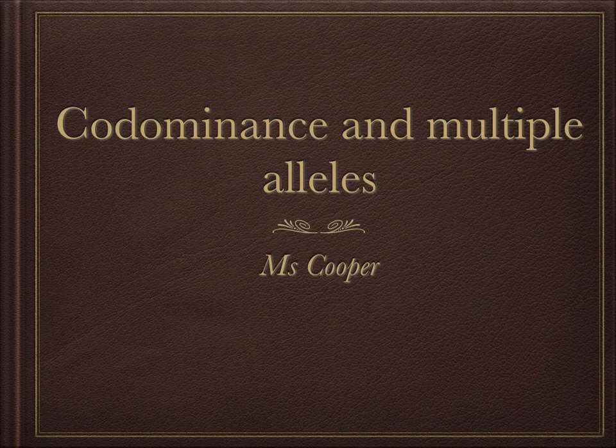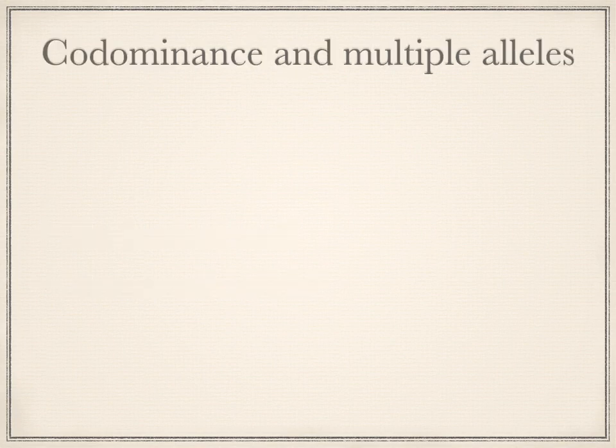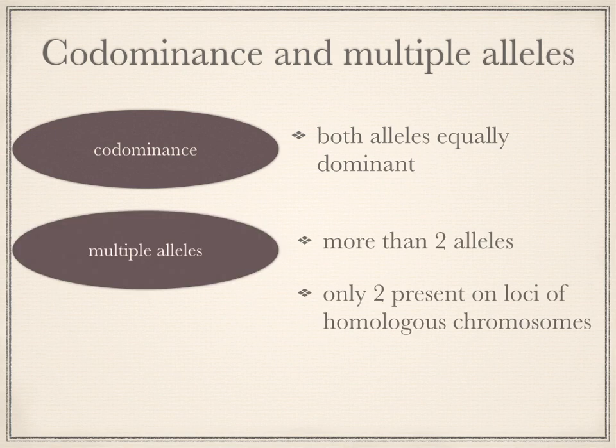In this topic, we're going to have a look at codominance and multiple alleles. By the end of this topic, you should know what codominance is, what multiple alleles are, and be able to give an example of each. Multiple alleles is when you have more than two alleles, of which only two may be present at the loci of an individual's homologous chromosomes.